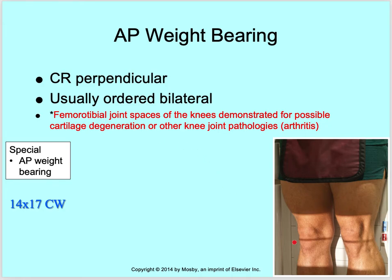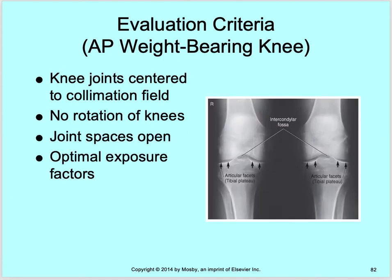Your weight bearing knees — usually individual weight bearing knees are done, so they'll do a right and a left. It's not very common to do both knees on one image. Your central ray is perpendicular, so there's no angle. Usually ordered as bilateral. The femoral-tibial joint spaces are demonstrated for possible cartilage degeneration or other knee joint pathologies such as arthritis. Zero degrees, no angle, usually a right and then a left. Just know what the protocol is at your clinic site.